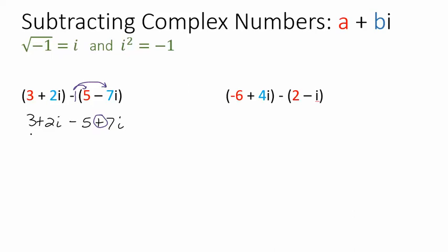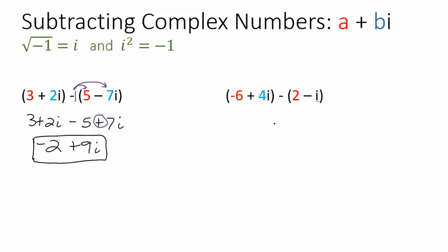We're going to combine like terms. The 3 take away 5 — the real number part gives me negative 2. And then the imaginary part, 2i plus 7i gives me 9i. And that is a complex number in complex form. If you want to try this subtraction one on your own, you can pause the video and start it when you're ready.